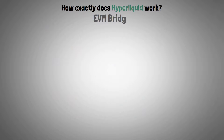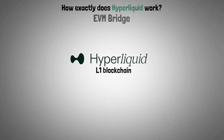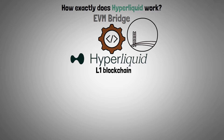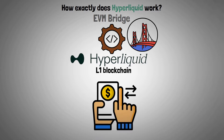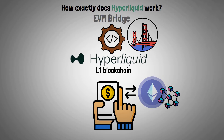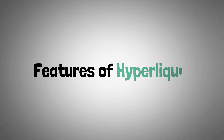EVM bridge: Hyperliquid's Layer 1 blockchain incorporates an Ethereum Virtual Machine bridge to facilitate smooth asset transfers between Ethereum-based networks. Now let's overview the features of Hyperliquid.